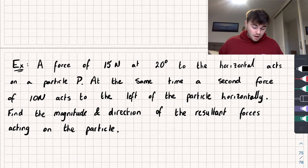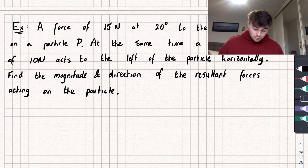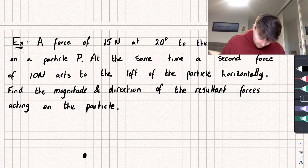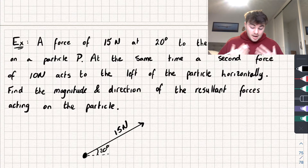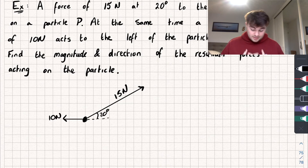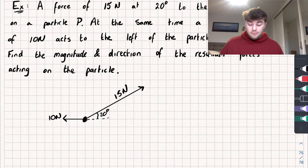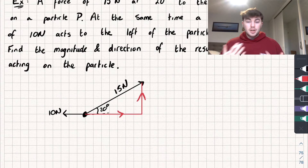The exam question: a force of 15 newtons at 20 degrees to the horizontal acts on a particle P; at the same time a second force of 10 newtons acts to the left of the particle horizontally. Find the magnitude and direction of the resultant force. First, I'll draw a diagram: the particle has 15 newtons at 20 degrees to the horizontal and 10 newtons acting to the left. I'll split the 15 newtons into its horizontal and vertical components.